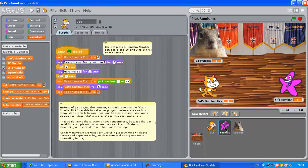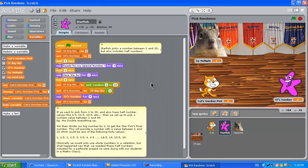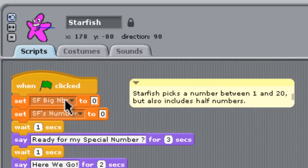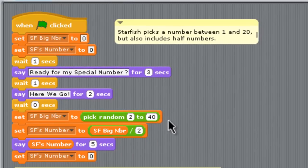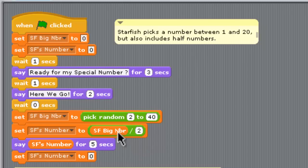Alrighty, let's click across and have a look at Mr. Starfish, his sprite. So he's got a big number and he's also got a starfish number. He's got two variables set up here at the start which are both set to 0. So he says ready for my number, here we go. Now his number he picks between 2 and 40, not between 1 and 20, and then that big number that he's picked gets divided by 2 down here to make his actual number which he says out here to the audience.